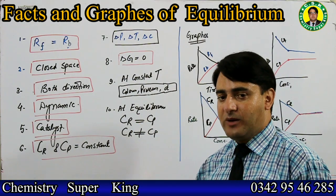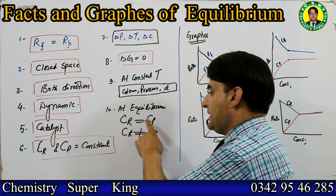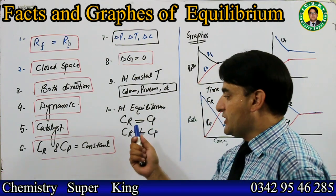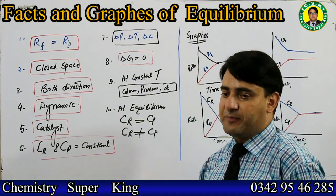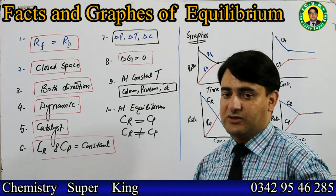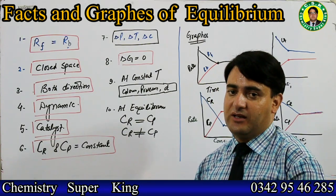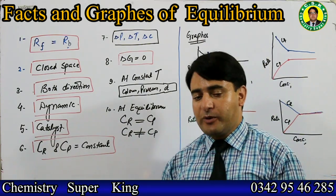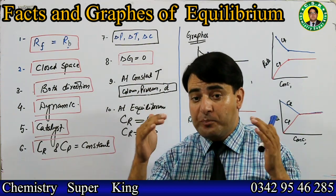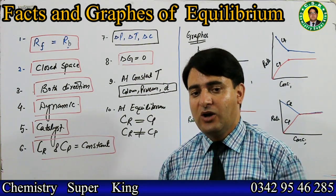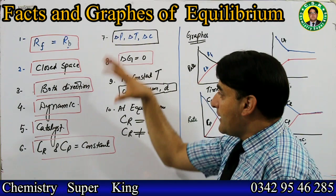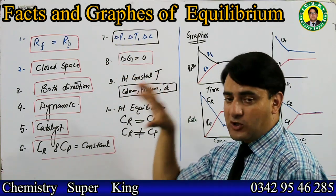Remember: at chemical equilibrium, it is not necessary that the concentration of reactants equals the concentration of products. Both cases are possible - at equilibrium, the concentration of reactants and products can be equal, or they may not be equal. These are some important facts about equilibrium.